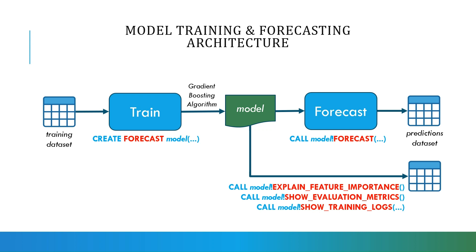This is a model training and forecasting architecture for time series forecasting with ML-powered functions in Snowflake Cortex. You start with a training dataset — historical data from the past — and pass it to the train step through a CREATE FORECAST statement. At this point, a model is created internally using the gradient boosting algorithm.